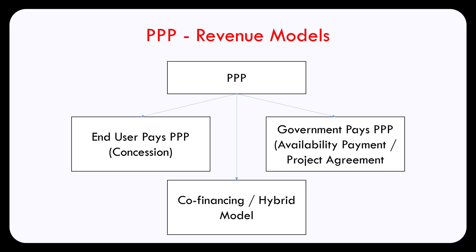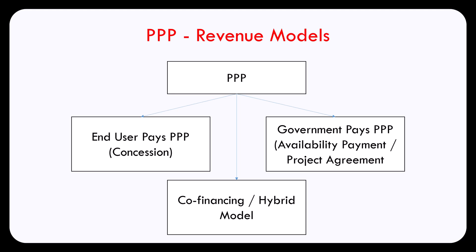For example, the project company may be given a concession to collect end-user fees from the services provided by the infrastructure, while at the same time the government makes availability payments and may also co-finance the project. In today's world, it's rare to see a pure government-pay or end-user-pay model — typically we see a hybrid model. However, it is important to understand some of the key distinctions between these two revenue models.